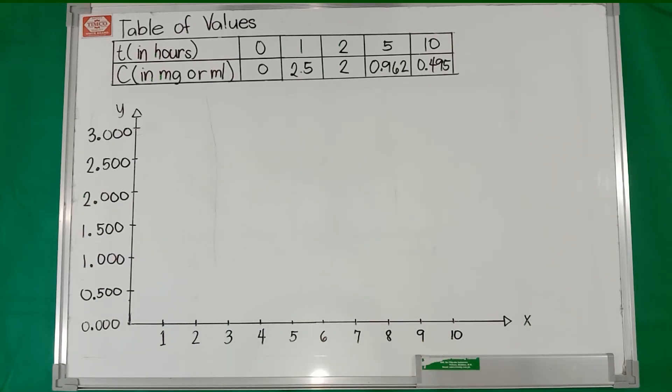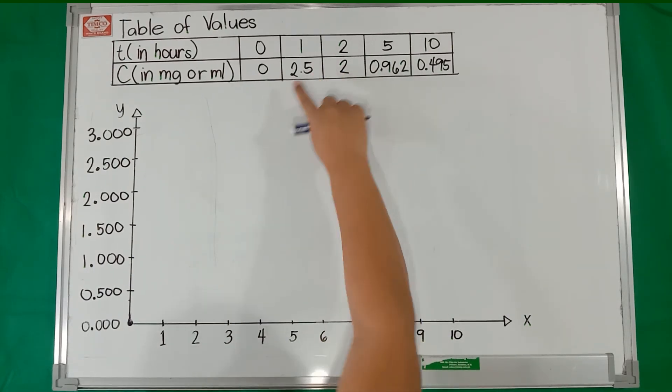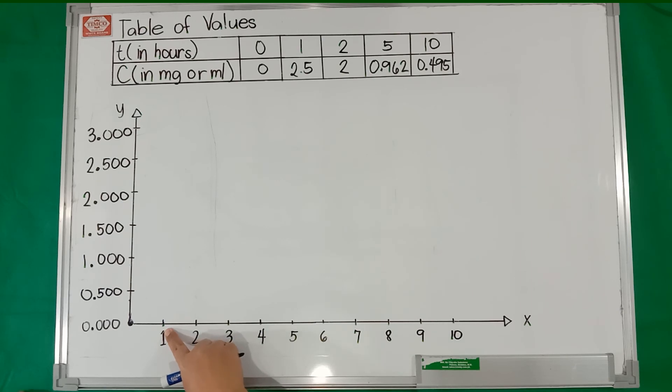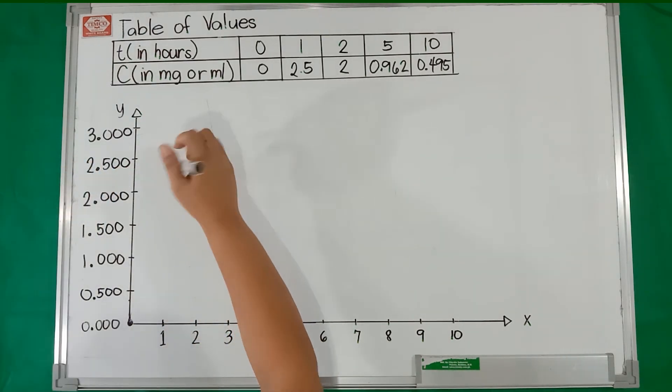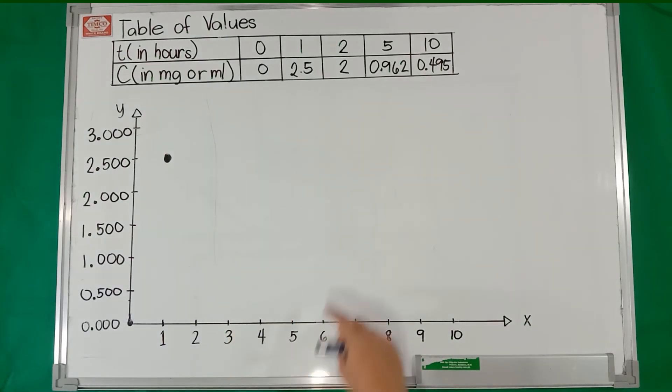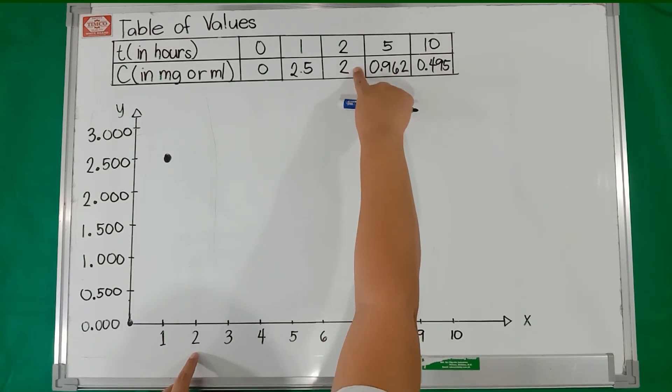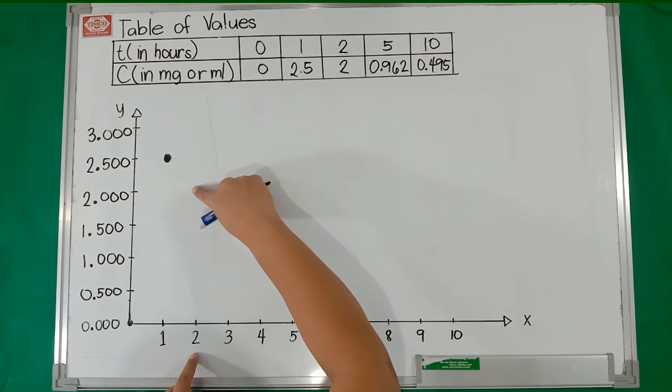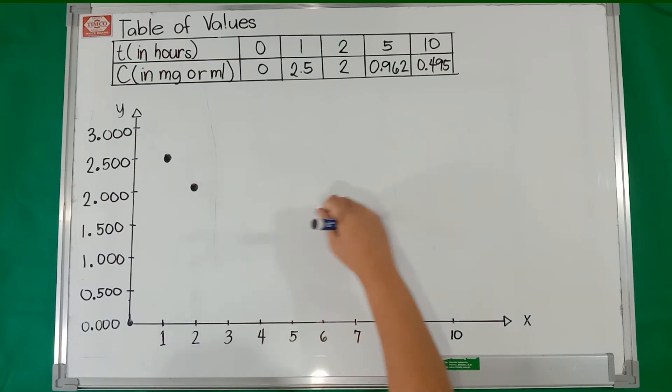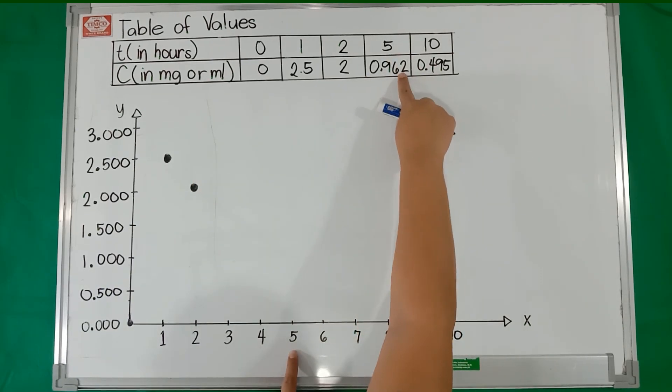Let us now sketch the graph from the values in our table. So, we will start with the initial time which is 0, 0 which is there's no medicine given yet. Next, after 1 hour, the dosage took effect so we have 2.5 milliliters. After 2 hours, we have 2 milligrams or milliliters.